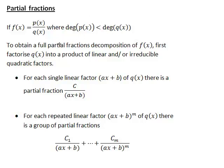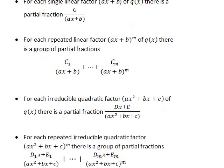What we do is first factorise q(x), the polynomial on the base. We factorise it into a product of linear and/or irreducible quadratic factors. The form of the partial fractions representation will then depend on whether these are single linear factors, repeated linear factors, single irreducible quadratic factors, or repeated irreducible quadratic factors.